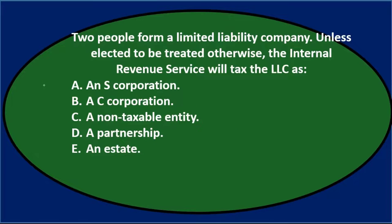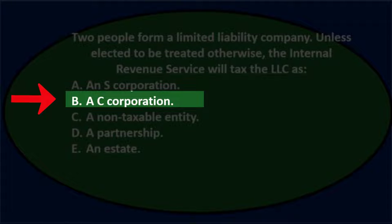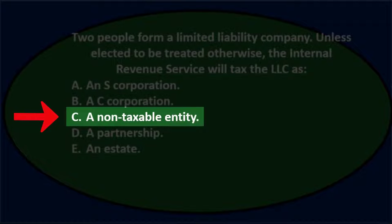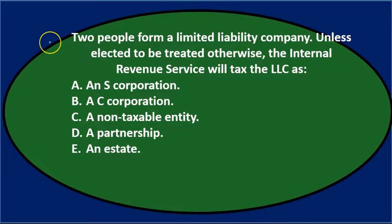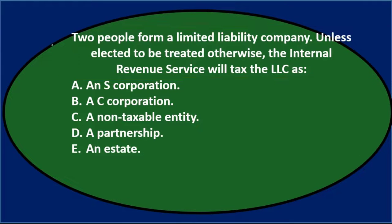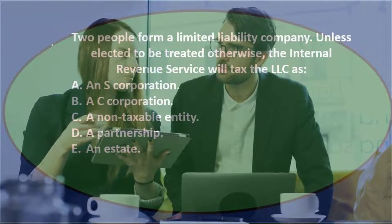Next question: two people form a limited liability company. Unless elected to be treated otherwise, the Internal Revenue Service will tax the LLC as: A) an S corporation, B) a C corporation, C) a non-taxable entity, D) a partnership, or E) an estate. The LLC is one of those hybrid organizations — it's confusing because it has characteristics between a partnership and a corporation.